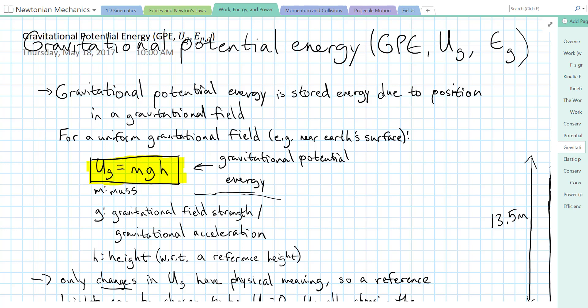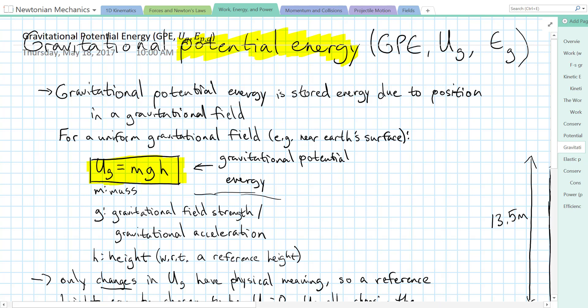In this video I'm going to talk about gravitational potential energy. We've already talked about kinetic energy — kinetic energy is energy due to the motion of an object. Potential energy, on the other hand, is stored energy due to the position of an object. There are many different types of potential energy, but the most common one in mechanics is gravitational potential energy, which is stored energy due to position in a gravitational field.